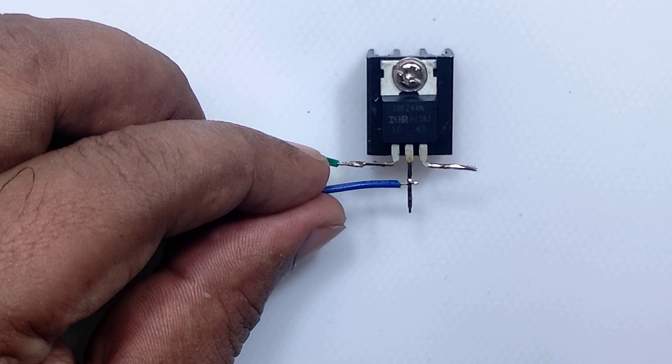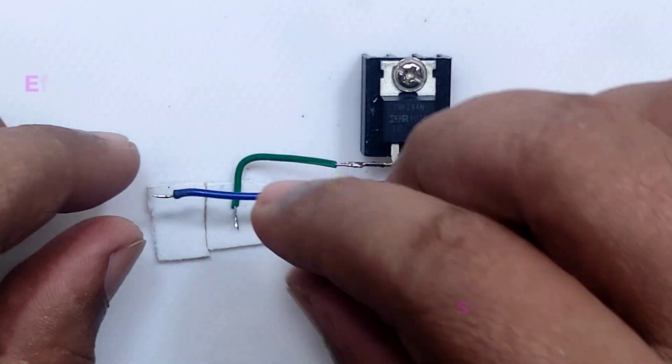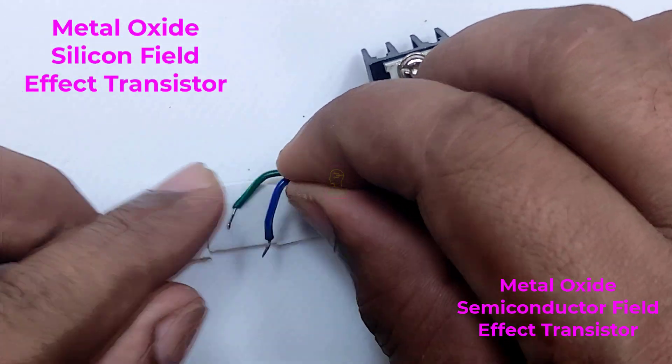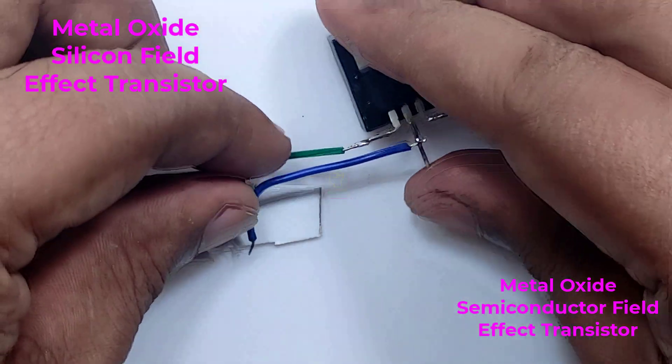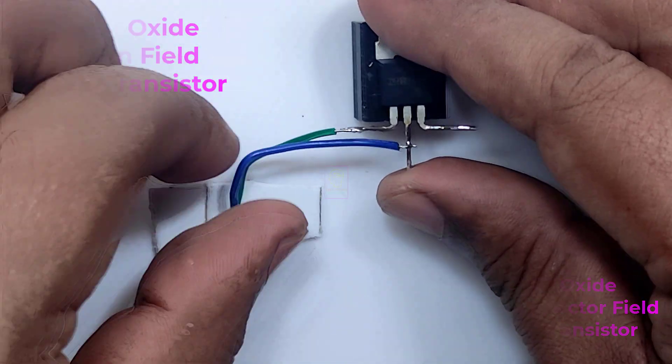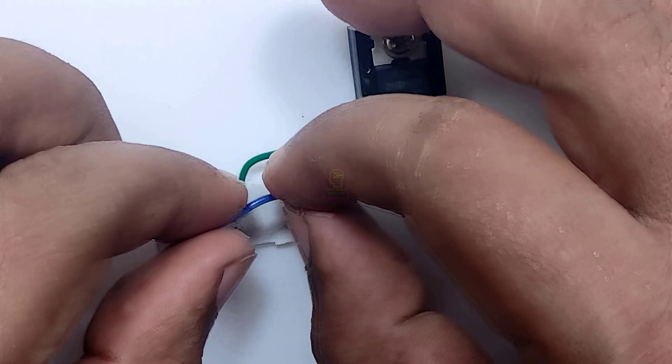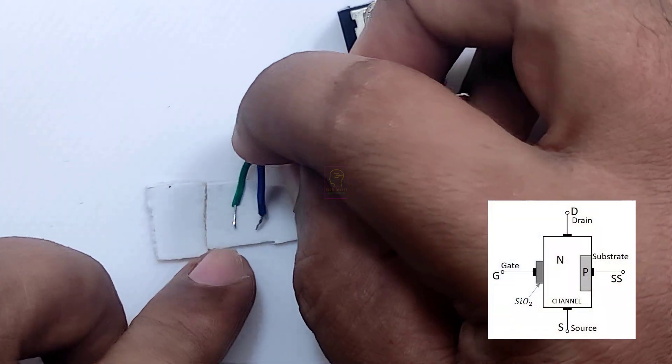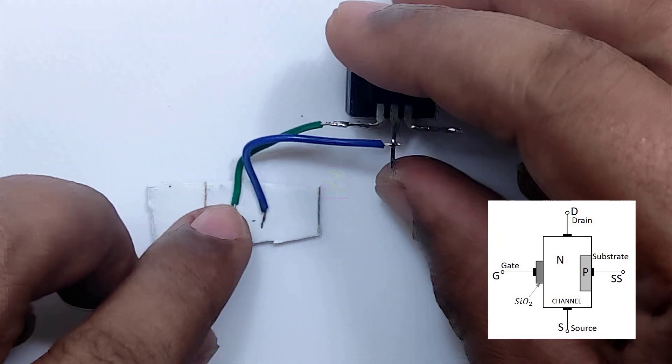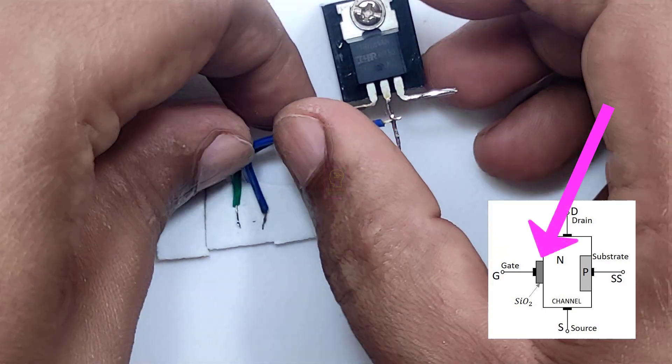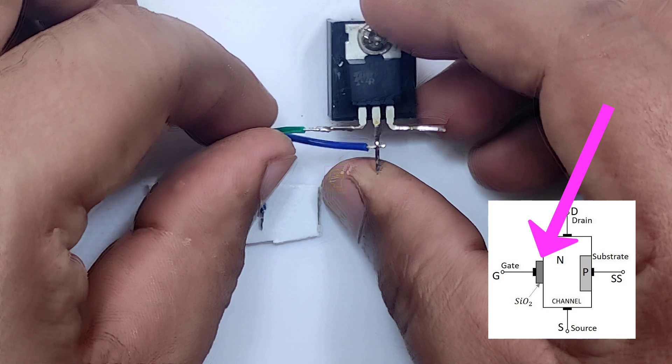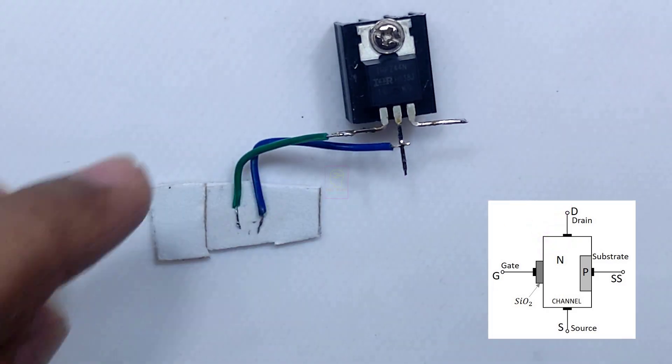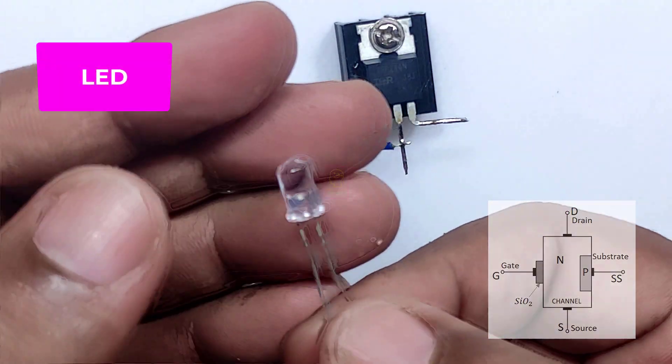Then only you will understand the working principle of this circuit. MOSFET stands for Metal Oxide Silicon Field Effect Transistor or Metal Oxide Semiconductor Field Effect Transistor. The construction of a MOSFET is a bit similar to the field effect transistor. An oxide layer is deposited on the substrate to which the gate terminal is connected. The oxide layer, that is silicon dioxide layer, acts as an insulator and hence the name MOSFET.